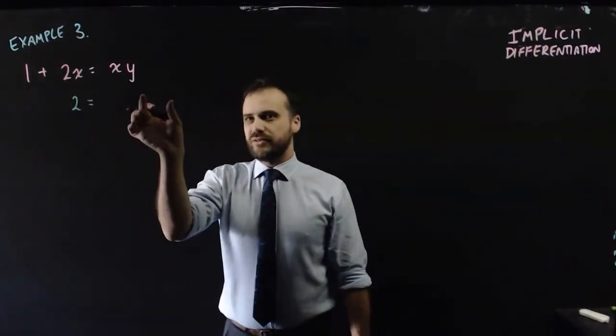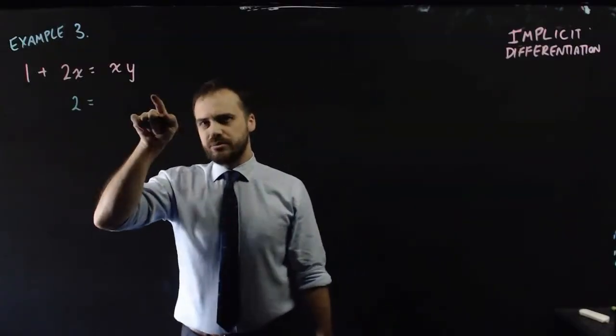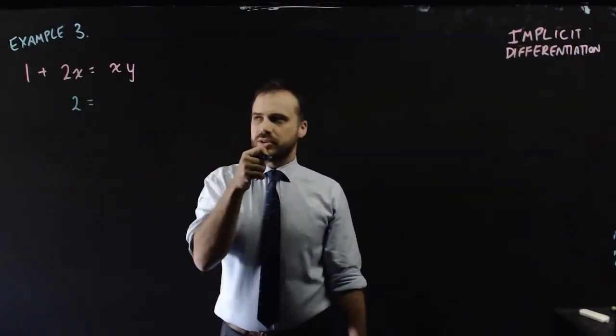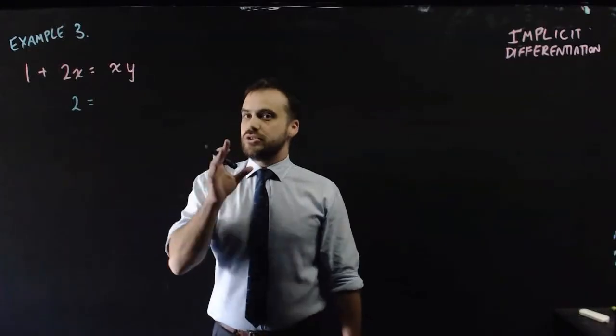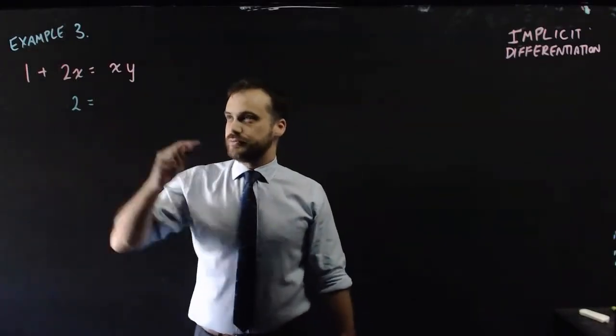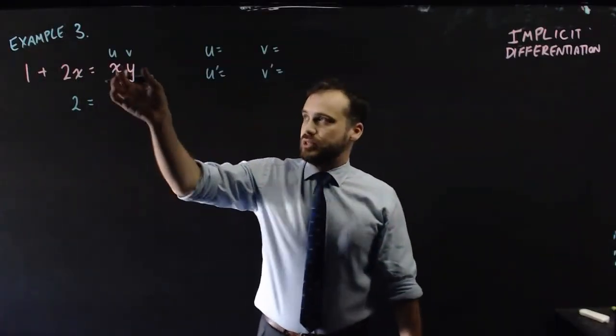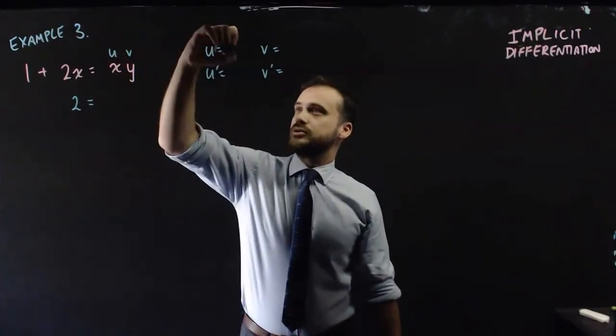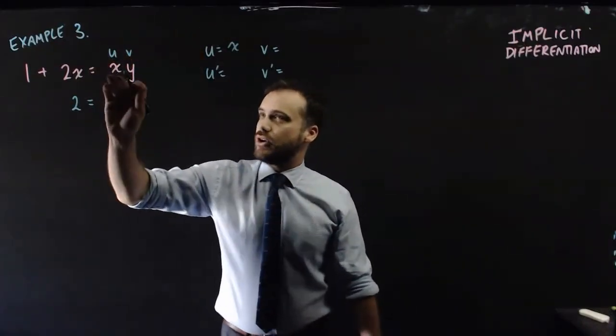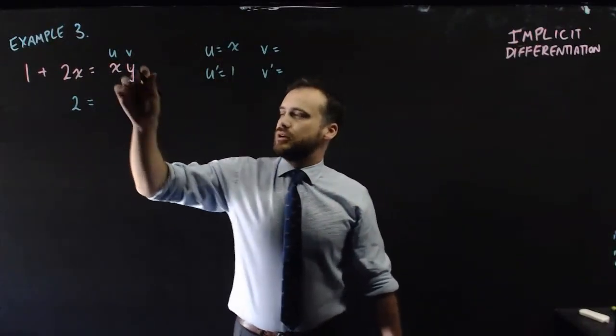Now, what about the derivative of this? This is a term with an x and a y in it. We can do it. We just need to use the product rule. Now, this is something times something. So we can do u equals x. The derivative of x is 1.